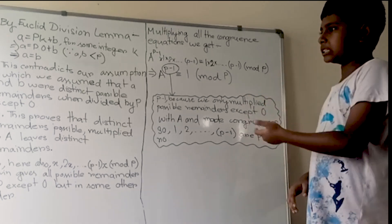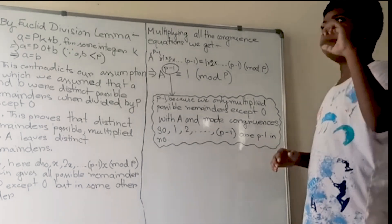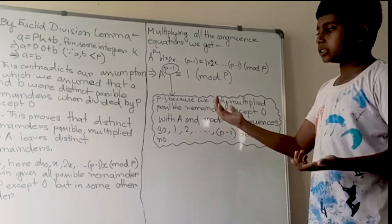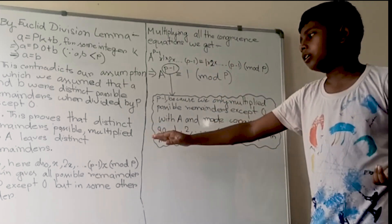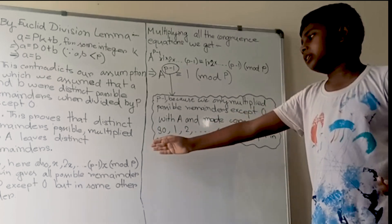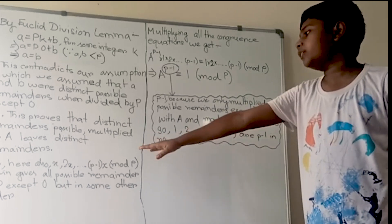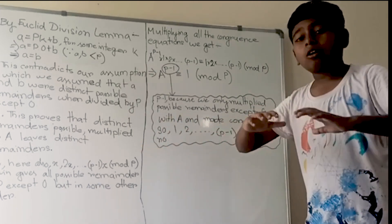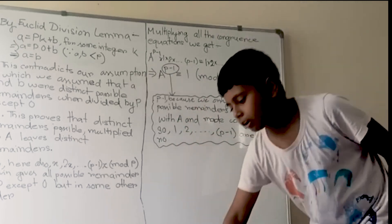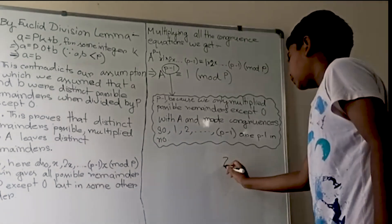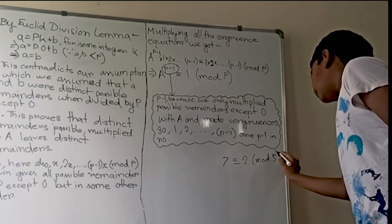This proves that distinct remainders multiplied by a yield distinct remainders. So when we simplify a·1 ≡ x mod p, a·2 ≡ 2x mod p, up to a·(p−1) ≡ (p−1)·x mod p, the right-hand side gives all possible remainders of p except 0, but in some different order.